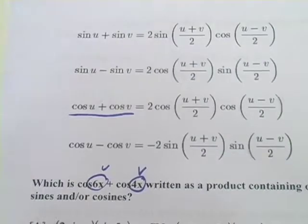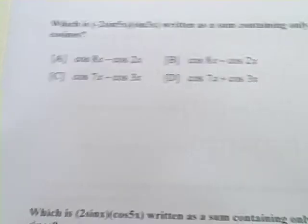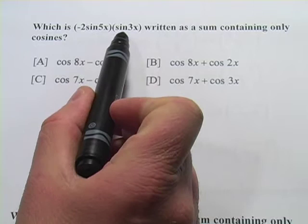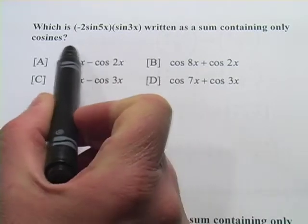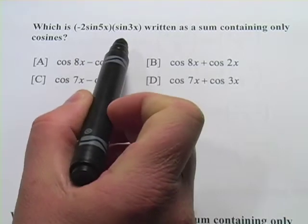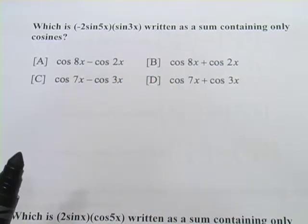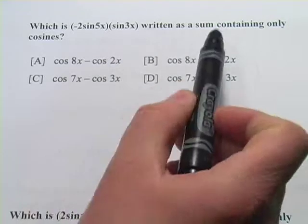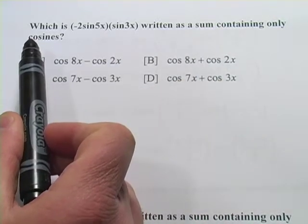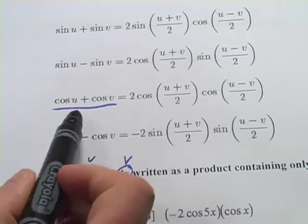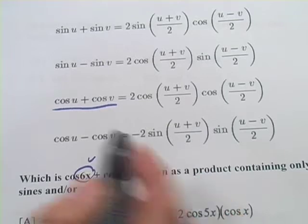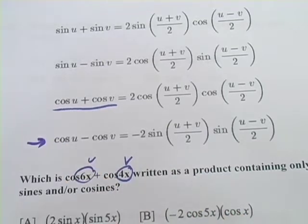Let's look at one where we do this backwards. So in this next problem we have which is negative 2 sine 5x times sine 3x written as a sum containing only cosines. Here they're giving us the product side of the formula, and we need to find the sum side. Now our product is just sines, and we want to find a sum that's only cosines. So let's look at our formulas here. The only one that has a sum that's cosines and a product that's sines is going to be this formula here.